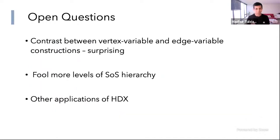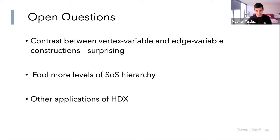In terms of open questions: it's a subtle contrast between vertex-variable and edge-variable constructions, and it would be good to understand it more. We can only prove hardness up to square root log n levels, and it's not clear if that's necessary. Other applications would also be good to explore.